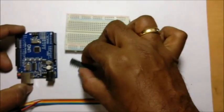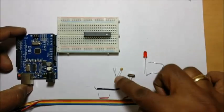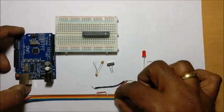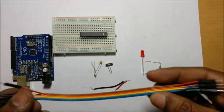You need a breadboard for fixing the IC, two numbers 22PF disk capacitors, a 16MHz crystal oscillator, male to male jumper wires and one LED and resistors.